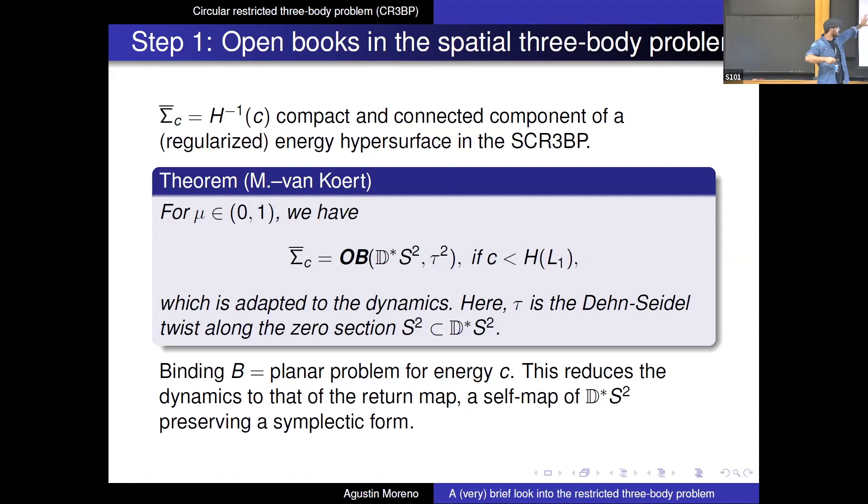So what this theorem tells us is that you reduce the dynamics in the fivefold, which is now a five dimensional manifold, right, to the study of some return map on a four dimensional manifold namely, a symplectomorphism of D stars 2. So I mean, there's a whole different story whether we can actually study this map in a reasonable way in the future.